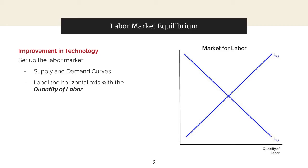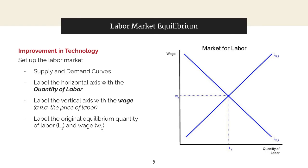The horizontal axis is the quantity of labor. The vertical axis is the wage, aka the price of labor. And finally let's label our original equilibrium point W1 and L1.